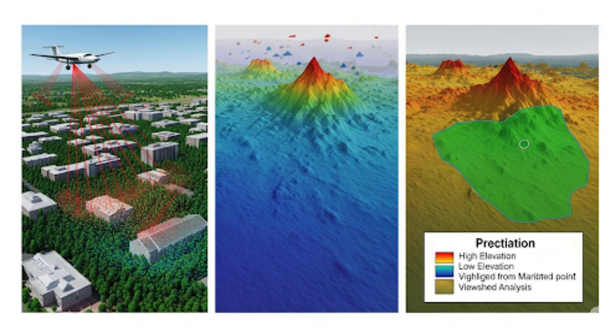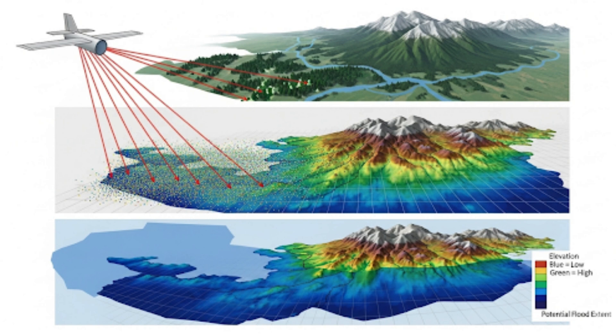A DHM represents the height of objects and is useful in 3D modeling of buildings and other objects. A DHM is created by subtracting DEM elevation values from DSM elevation values, and is calculated using a raster function or a geoprocessing tool. An intensity raster displays the return strength of the laser pulse reflected to the LiDAR sensor, and is useful for feature detection and extraction.